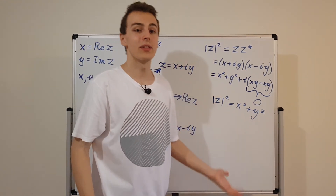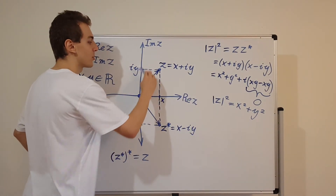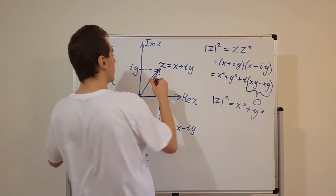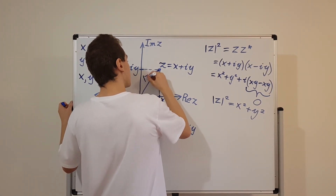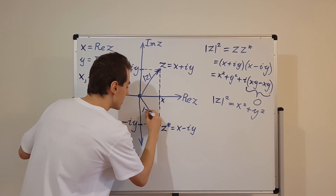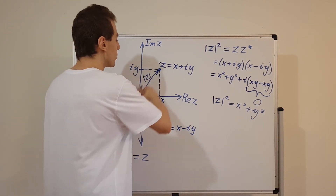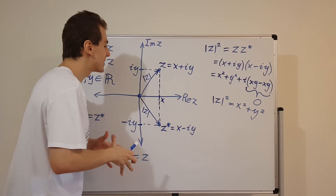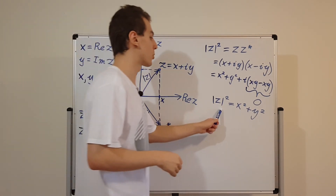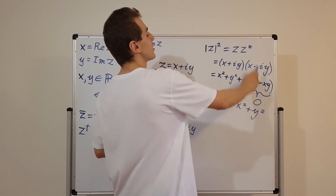And this is exactly Pythagoras' theorem, which tells you that x squared plus y squared is equal to the square of the hypotenuse. This over here is the square of the hypotenuse — the magnitude of z is the length of this line. That's why I've drawn this as a little arrow, drawing it exactly the same as we would draw a vector in two dimensions. This is how you find the magnitude of a complex number, and this is why it works.